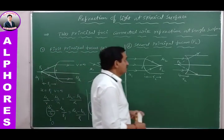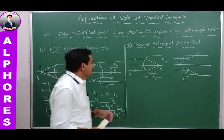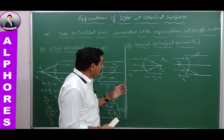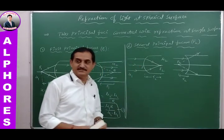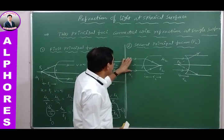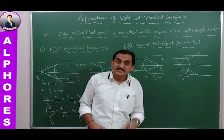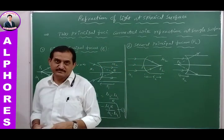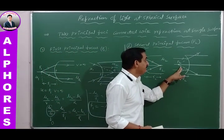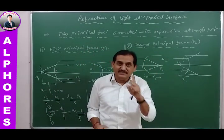The second principal focus is the point towards which light rays converge after refraction, or from which they appear to diverge, when a parallel beam of light is incident on the spherical refracting surface.